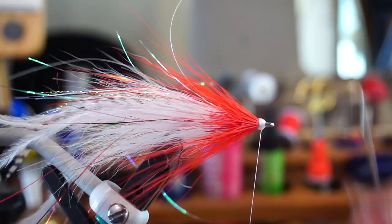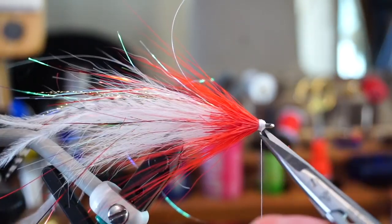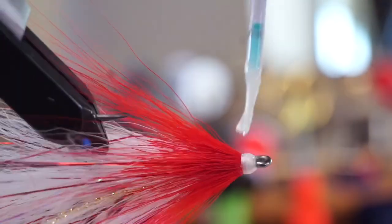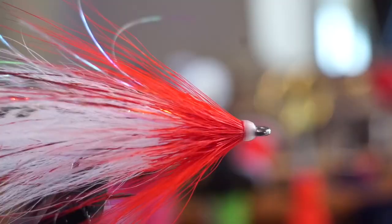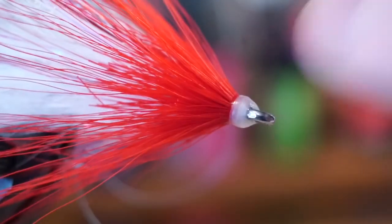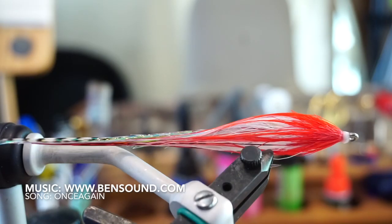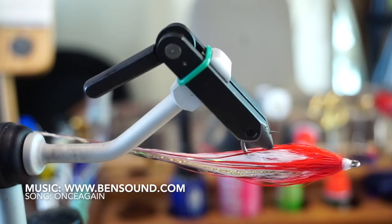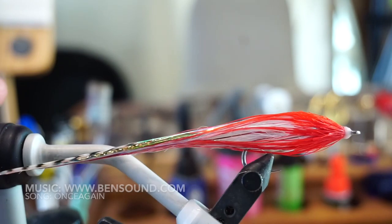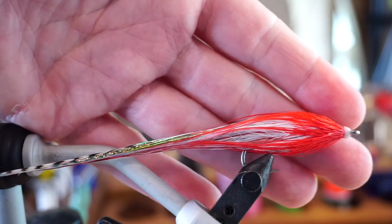Now whip finish your fly, and the fly is pretty much done. I do like to use some UV resin to cement the head of the fly before fishing it to make it more durable. Also, if you run the fly under warm water a few seconds and let it dry that way, it will help taper these fibers in a more teardrop shape. And here you can see roughly how large the fly is.